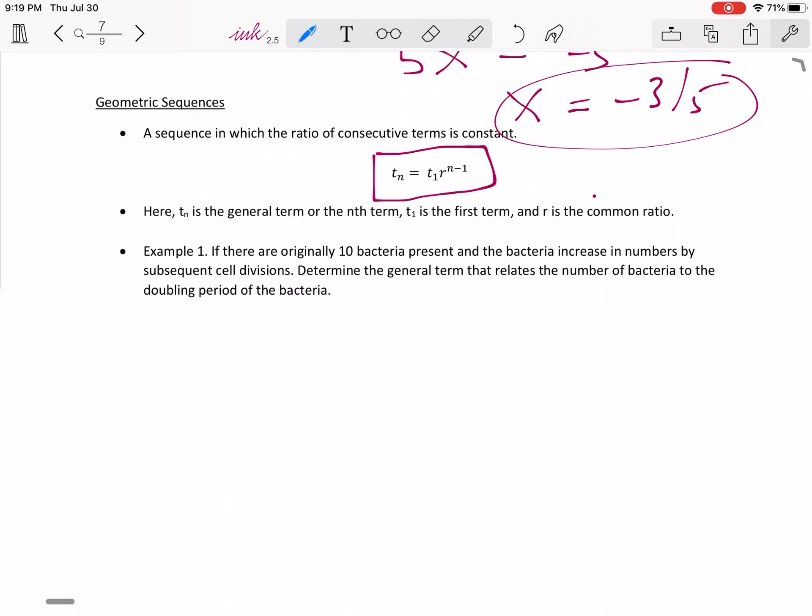So like for example, in example one, here you've got 10 bacteria present and then the numbers increase by cell division. So if you remember your cell biology, when we say a cell divides, one cell becomes two cells. So here what we're being asked is determine the general term that relates the number of bacteria to the doubling period of the bacteria.